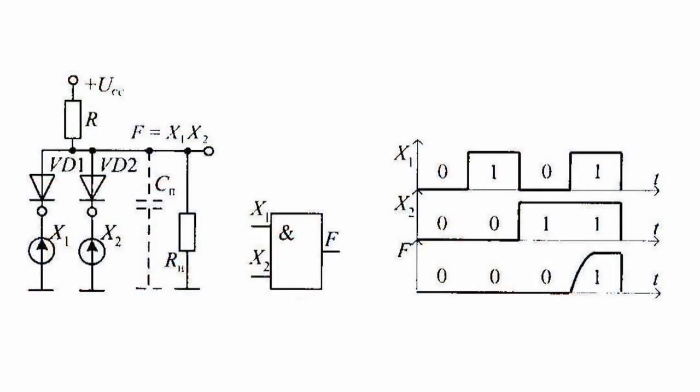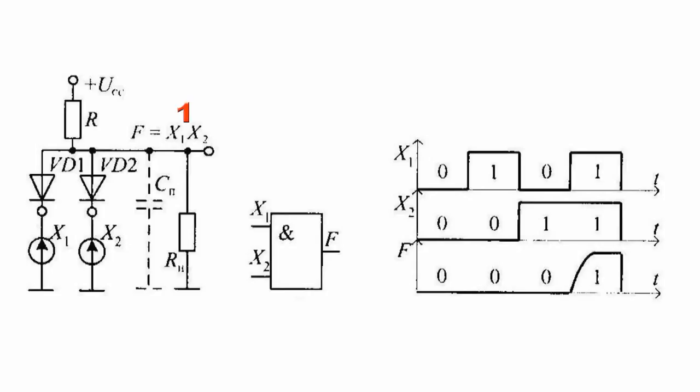Now let's look at how the AND element is executed. We can see that the high voltage level at the output of diode element AND is set only when the two inputs are simultaneously exposed to high voltage levels, which causes diodes VD1 and VD2 to close. The output signal edge duration depends on the charging time of the parasitic capacitance CP through the high resistance of resistor R.